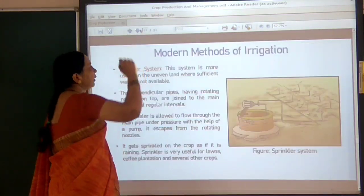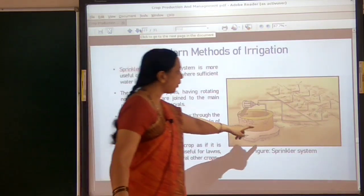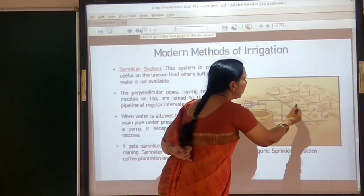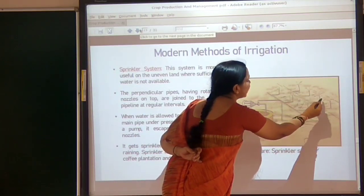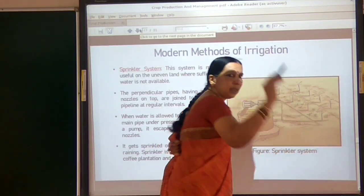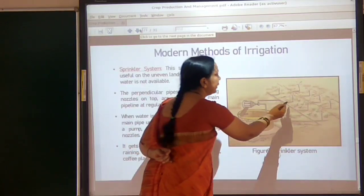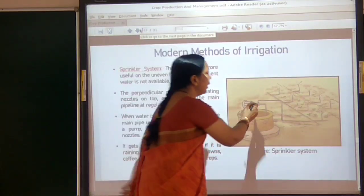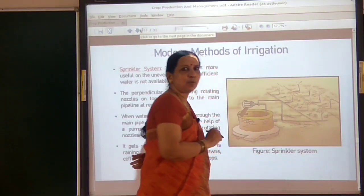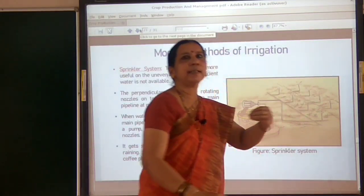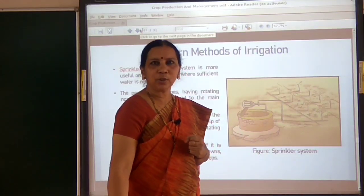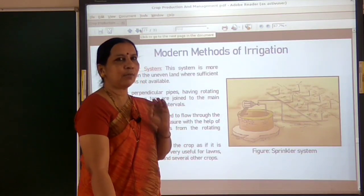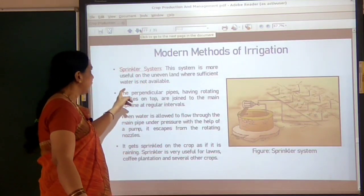What is the sprinkler method and where is it used? There are perpendicular pipes with rotating nozzles fixed to a main pipe. When water is pumped through the main pipe, it escapes from the nozzles and gets sprinkled over the crops. This is a very efficient method that neatly saves water. It is especially useful on uneven land where there is insufficient water.